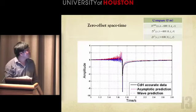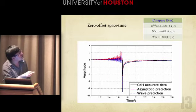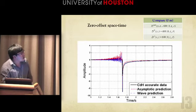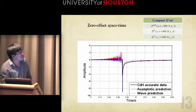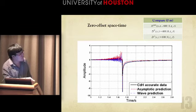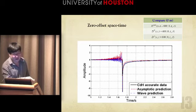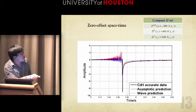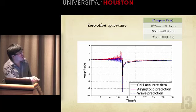Let's first look at the comparison at zero meter offset. The black line represents the Cagniard-de Hoop exact data. The blue line represents the prediction results from the wave method. And the red line represents its corresponding asymptotic results. Here we see, at this tail part, the wave prediction results match well with the asymptotic results.